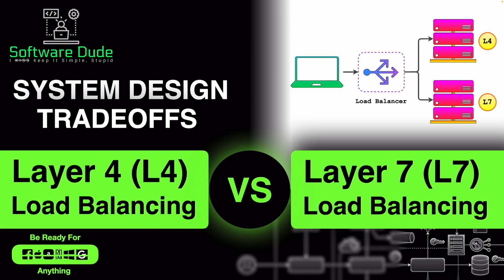Hello, welcome back to Software Dude. Load balancing is a critical aspect of modern networked applications, ensuring high availability, reliability, and performance. Load balancers distribute incoming traffic across multiple servers, optimizing resource utilization and preventing any single server from becoming a bottleneck. There are two primary types of load balancers based on OSI model layers: the Layer 4 load balancer and the Layer 7 load balancer. Today we'll look at the system design trade-offs between them.